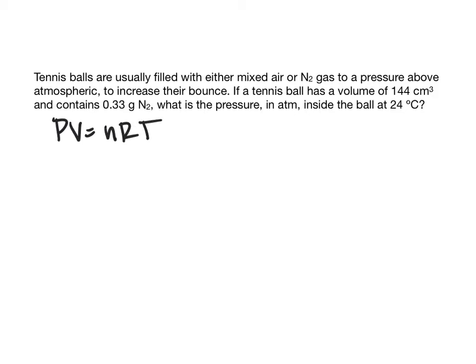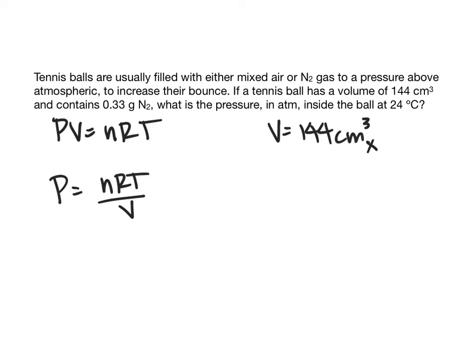We need to figure out the values. We're looking for pressure, so pressure equals NRT over V. The volume is 144 cubic centimeters. One cubic centimeter is one milliliter, and there are 1,000 milliliters in one liter, so we end up with 0.144 liters.